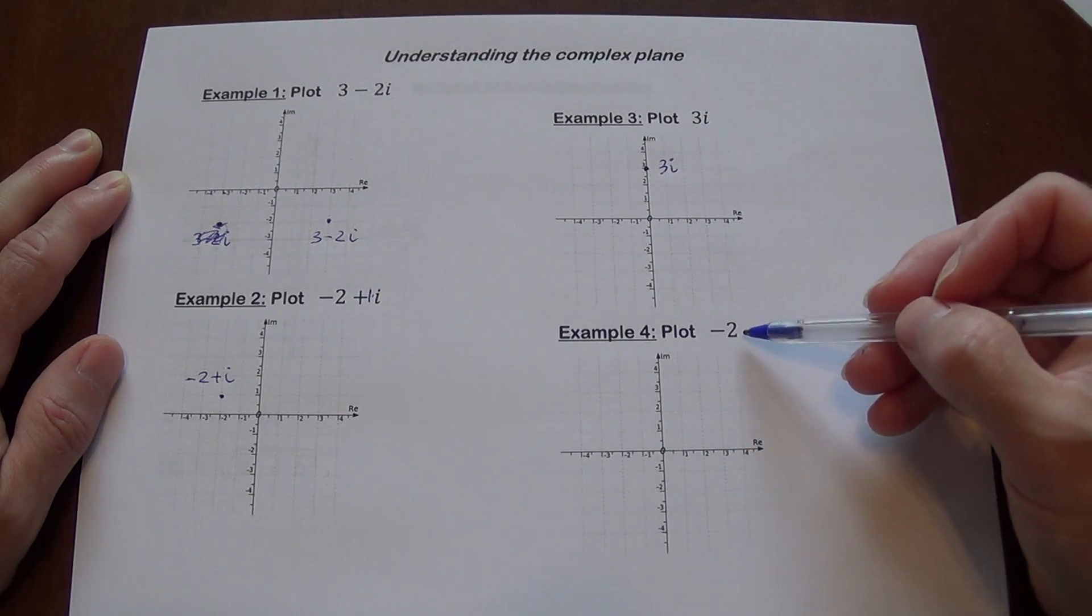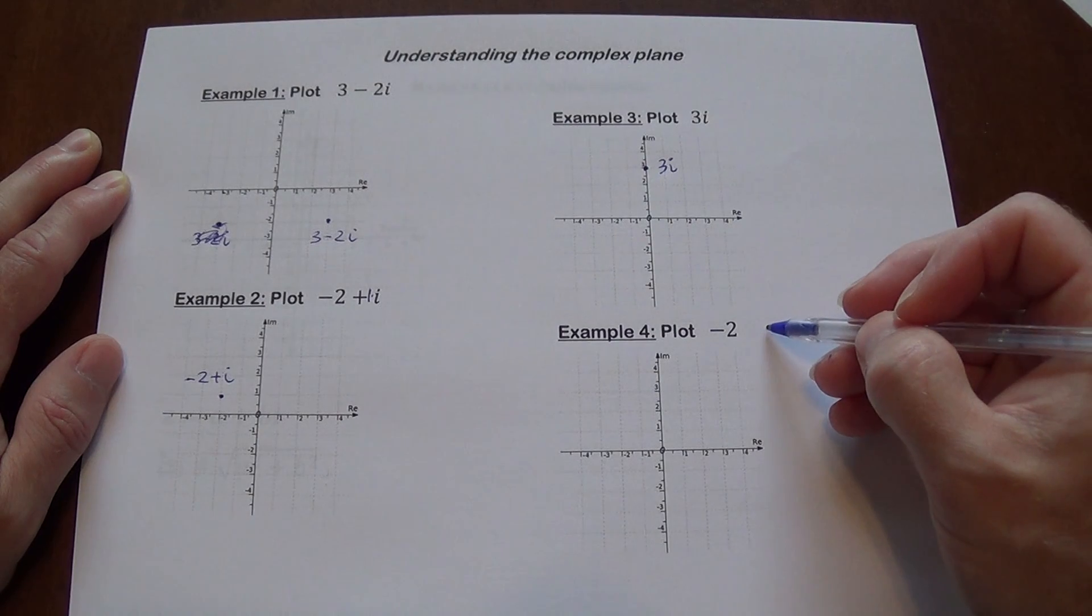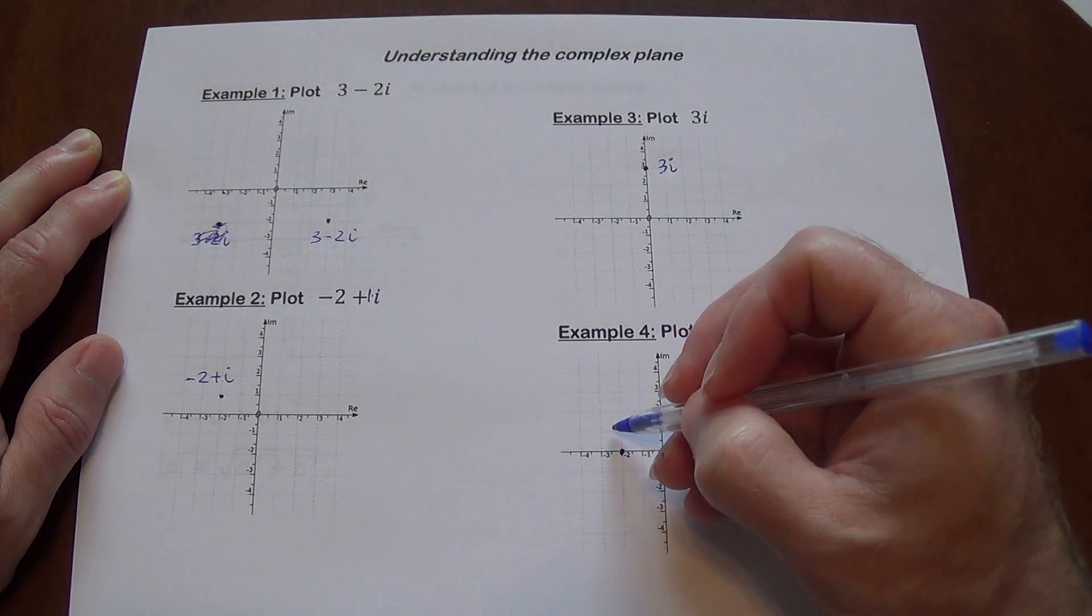And then I want to remind you, negative 2 is actually considered to be a complex number. It's just its imaginary part is non-existent, the b is 0, but negative 2. So we go to negative 2. You don't have any i here, so that's just going to be right there.